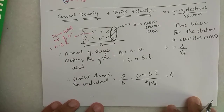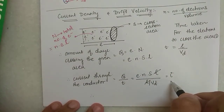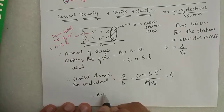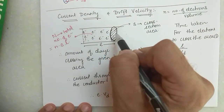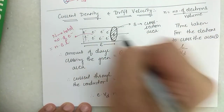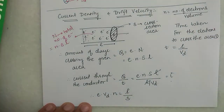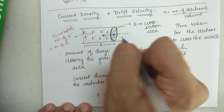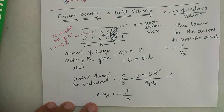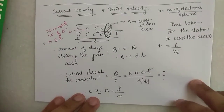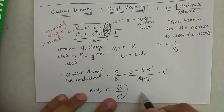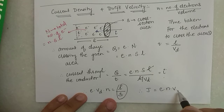Now, current is basically the charge crossing per unit time. So current through the conductor equals charge per unit time = e·n·S·L divided by t, where t = L/v_d. The L's cancel out, giving us current I = e·n·v_d·S. Therefore, I/S = e·n·v_d. But I/S is nothing but your current density J. So J = e·n·v_d.